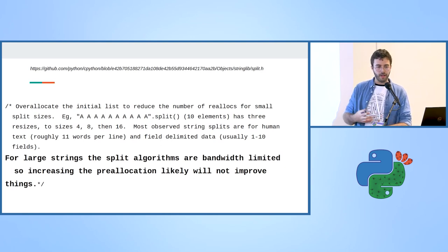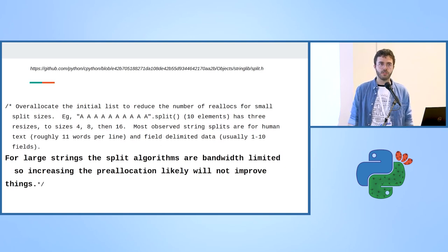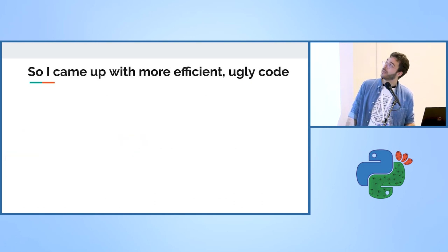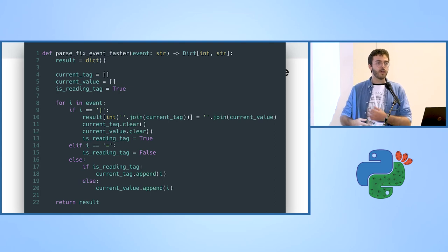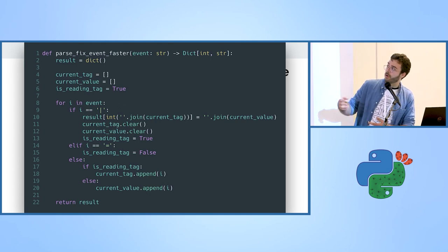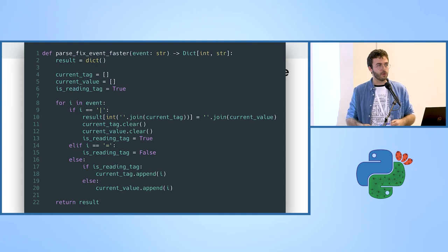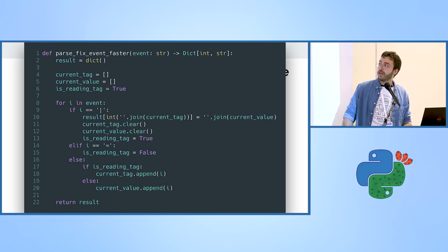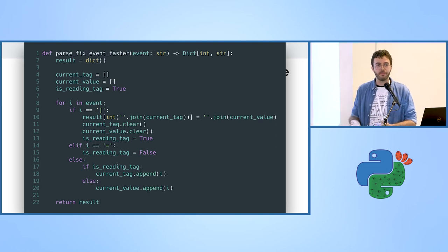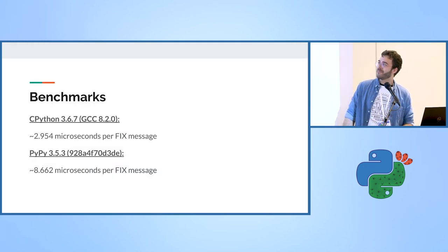I told myself, let's not use split and try something else. I came up with really ugly code that works — it goes character by character, with conditions: if I get the special character, the block ended; if I get the equals sign, I finished reading a tag and need to read the value. I benchmarked it expecting CPython to improve and PyPy to be even better — but CPython worked well while PyPy went worse.